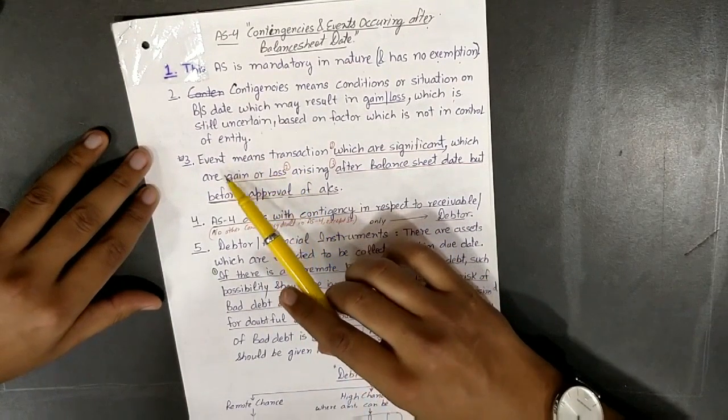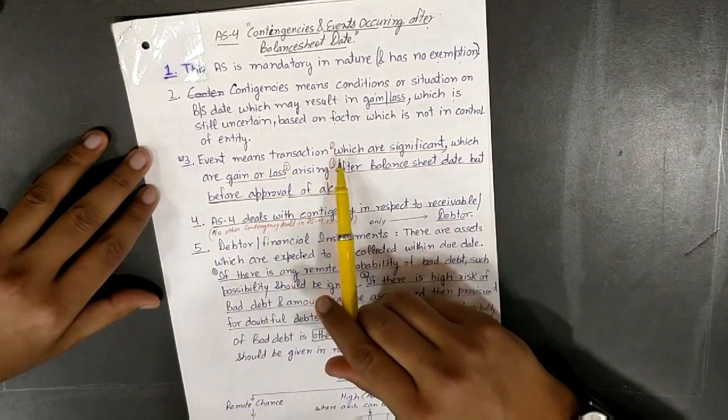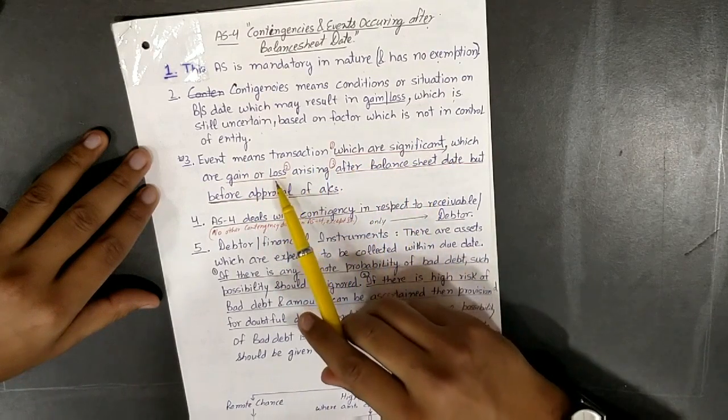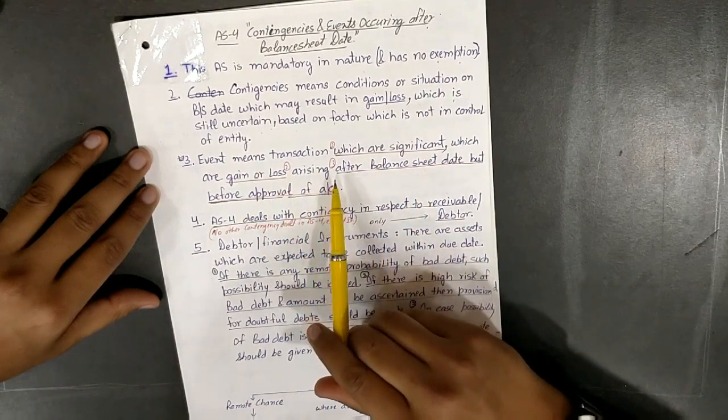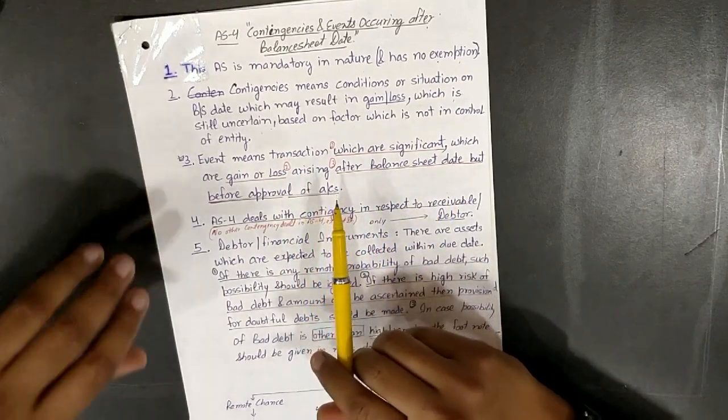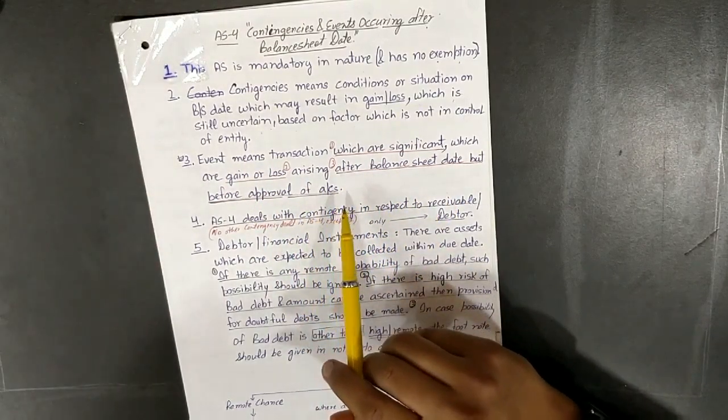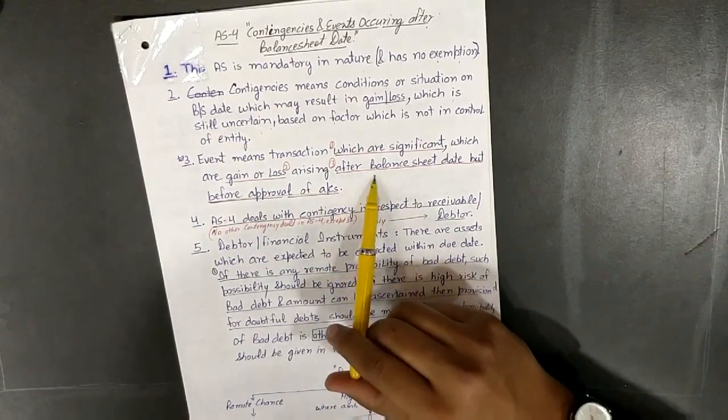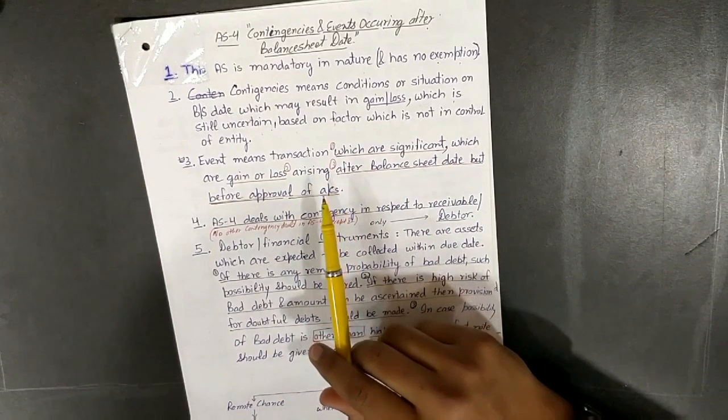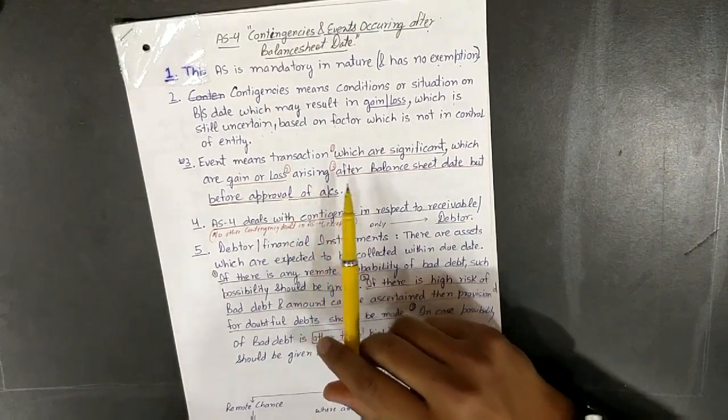Event means transactions which are significant, gain or loss arising after balance sheet date but before approval of accounts. Let's see whether events should be considered in the balance sheet or not.